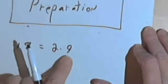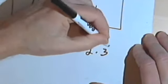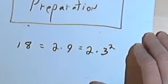Since 18 is even, if I divided it by 2, I would have 2 times 9, and 9 is a perfect square. So I'm going to rewrite that as 2 times 3 squared.